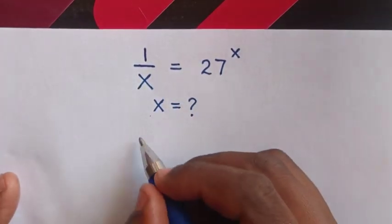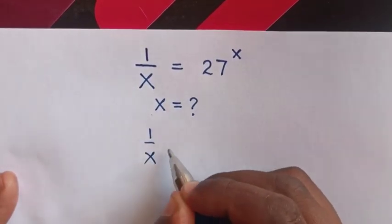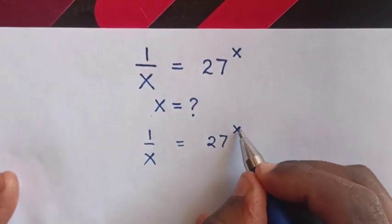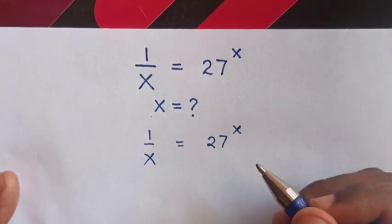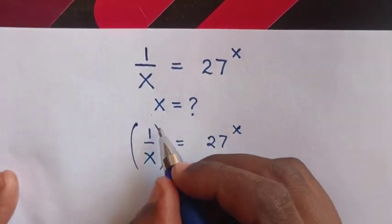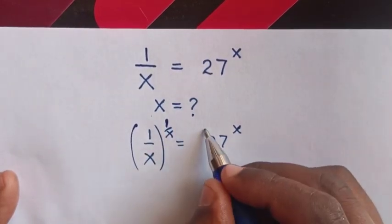First, from our equation 1 over x equals 27 to the power of x. Now to cancel this power of x, we raise both sides to the power of 1 over x.